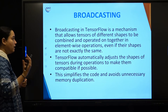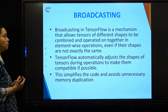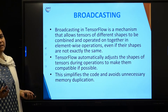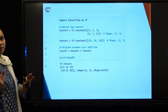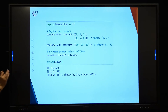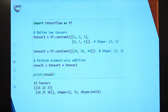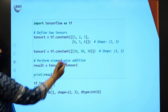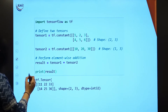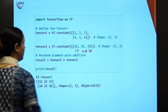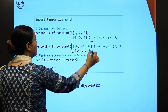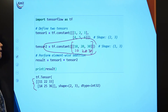TensorFlow will adjust the shape of tensors during operations to make them compatible if possible. This simplifies your coding and avoids unnecessary memory duplications. For a simple example of element-wise addition: when the shapes of two tensors don't match, broadcasting will duplicate the lower-dimension tensor — for example, duplicating 10, 20, 30 — and then add both tensors to give the result. So in the lower-dimension tensor, duplication happens and the result is produced. That was the overview of broadcasting.